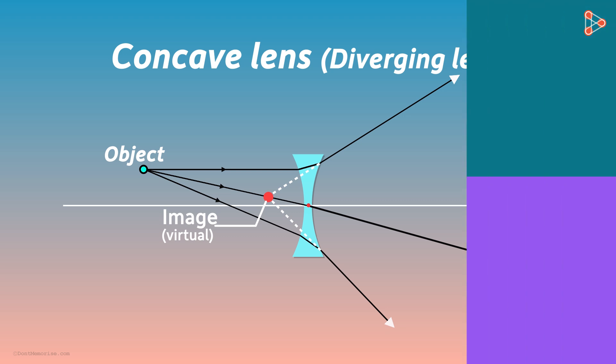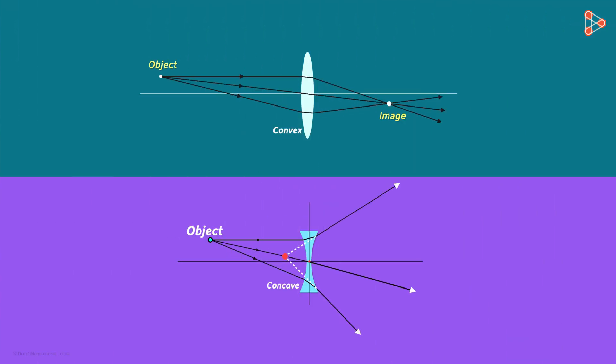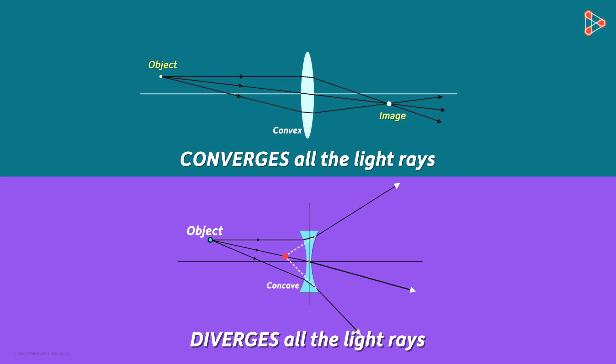Now let's look at both the lenses side by side. So the convex lens converges all the light rays from a point object, and the concave lens diverges all the light rays from a point object.